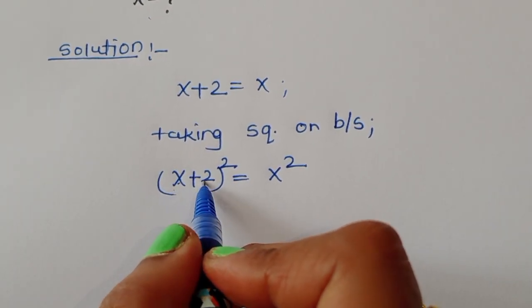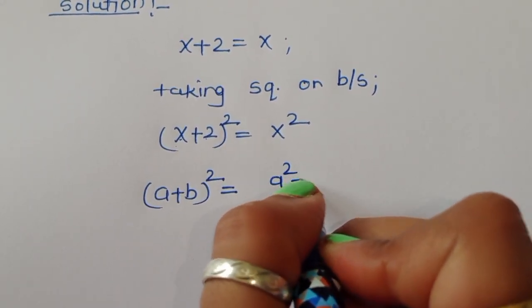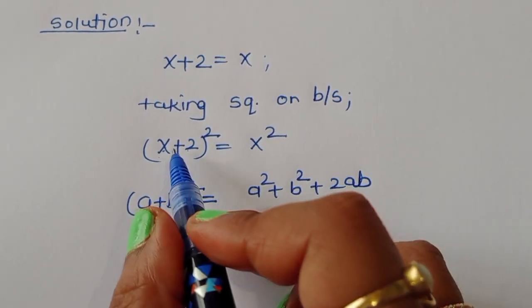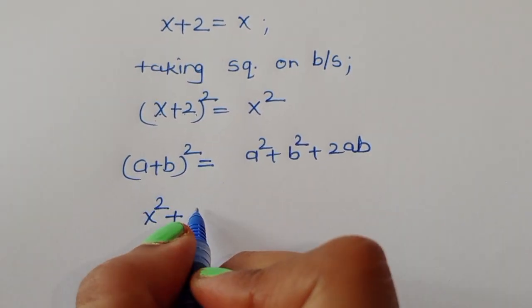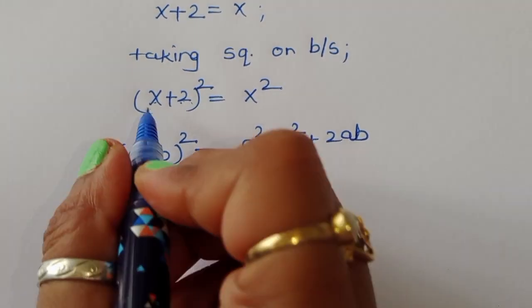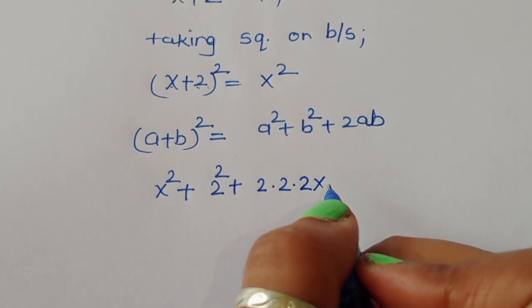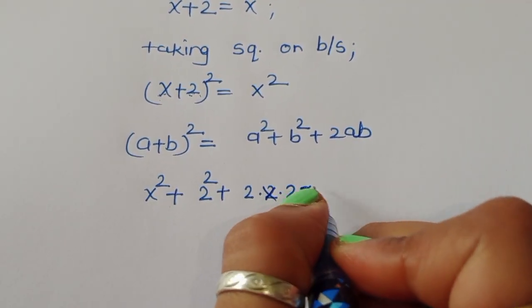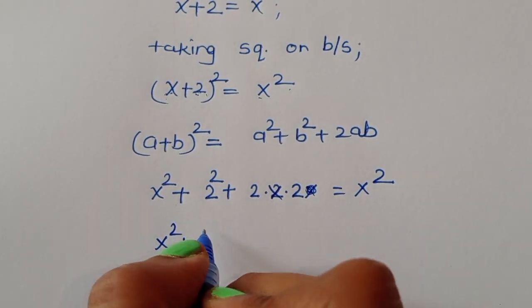Now this is the formula of (a + b)² — so (a + b)² is equal to a² + b² + 2ab. Using this formula, we will get x² + b², where b² is 2, so 2² plus 2 times a times b, which is 2ab.